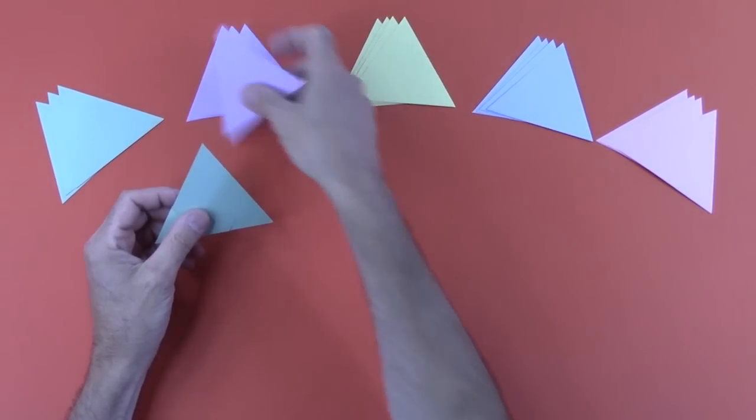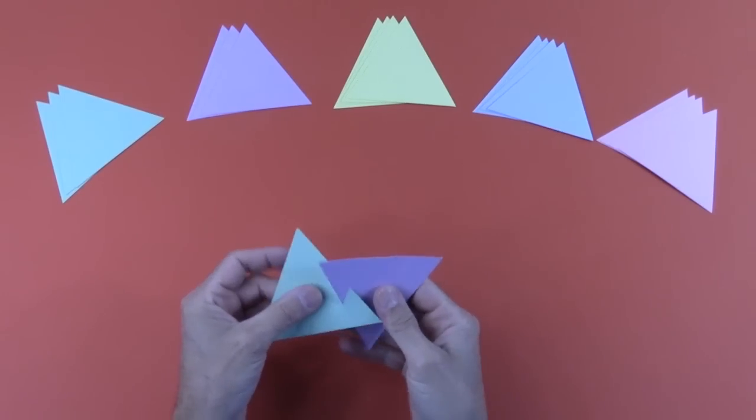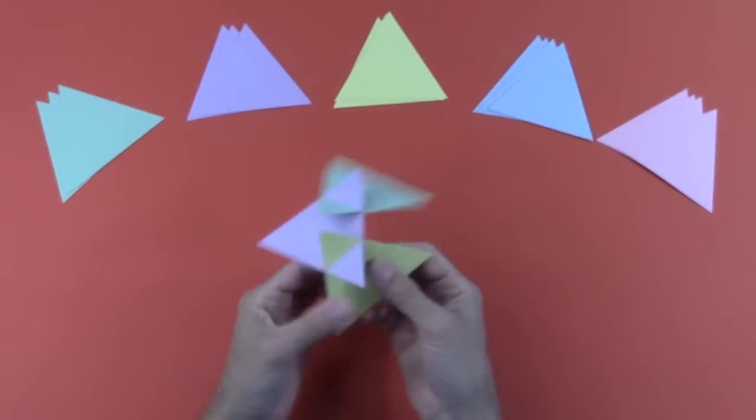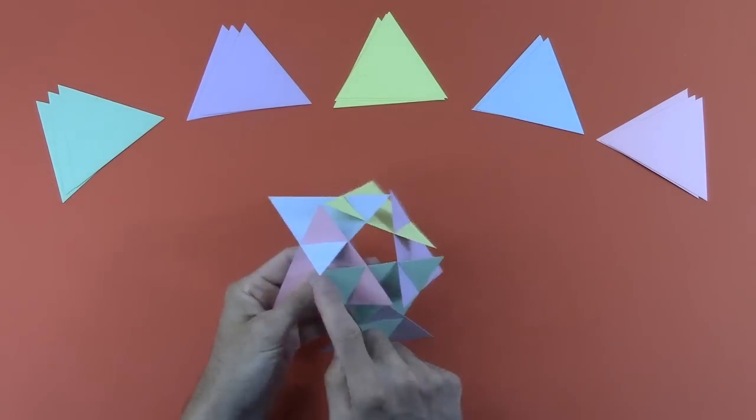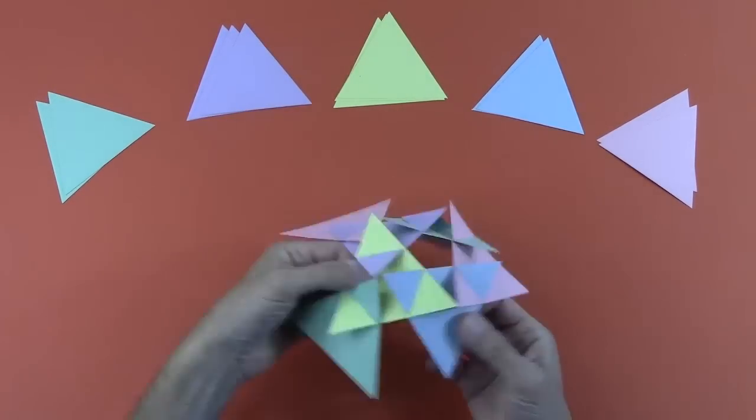To assemble this, we cut out 20 triangles with the slots. You could do it all in one color, but here I made four triangles in each of five colors. This is the easiest one of these seven designs to assemble.